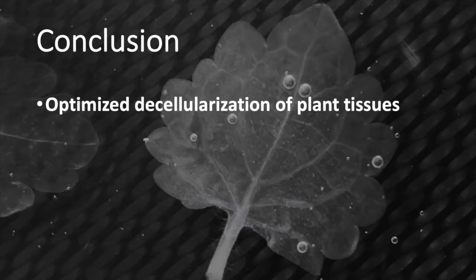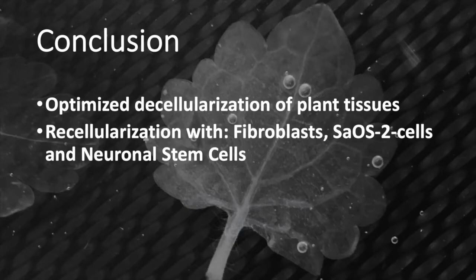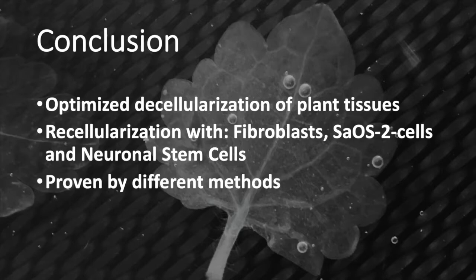In conclusion, it can be said that our project objective was achieved. We optimized the most suitable method for the decellularization of plant tissues. Recellularization was successfully performed with fibroblasts, SaOS-2 cells, and neuronal stem cells. This was proven by different methods.